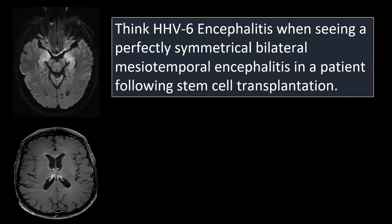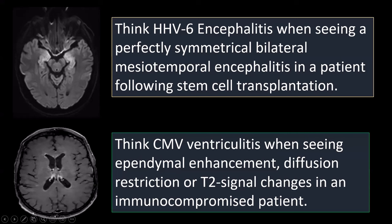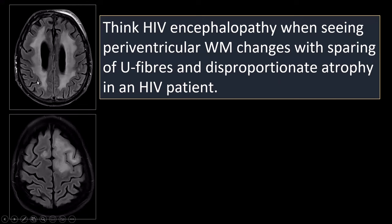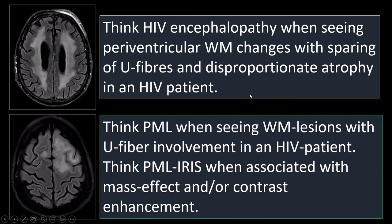That concludes this presentation on viral encephalitis and the immunocompromised patient. Key takeaways: consider human herpesvirus type 6 encephalitis when you see perfectly symmetrical bilateral mesiotemporal encephalitis after stem cell transplantation; consider cytomegalovirus ventriculitis when you see imaging findings of ventriculitis like ependymal enhancement or diffusion restriction in an immunocompromised patient; consider HIV encephalopathy when you see confluent periventricular white matter changes with sparing of the U-fibers and disproportionate atrophy in an HIV patient; and consider PML when you see one or more white matter lesions with U-fiber involvement in an HIV patient — and when these are associated with mass effect and contrast enhancement, you're probably dealing with PML-IRIS.